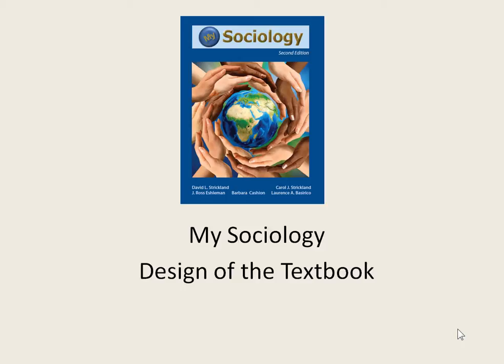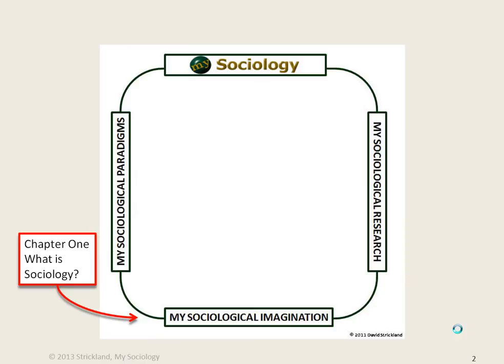This video introduces you to the design of the My Sociology textbook. It's useful to students to have an idea of how the textbook proceeds through the topic of society so that they can see how all the different topics fit together. The My Sociology textbook begins with the topic of what is sociology as a discipline and the all-important topic of the sociological imagination. This is typical of most introduction to sociology textbooks, but chapter 2 is where this book deviates from the typical model.